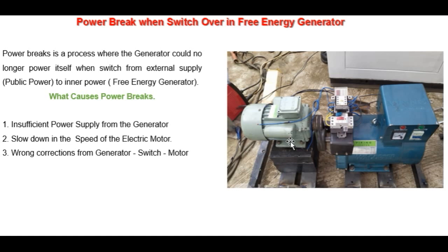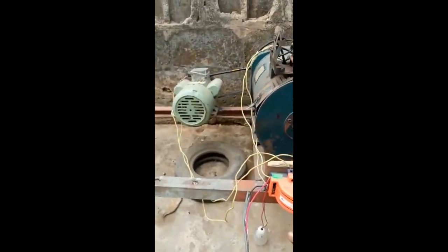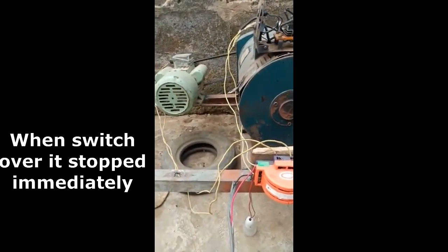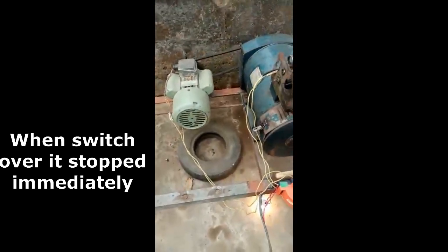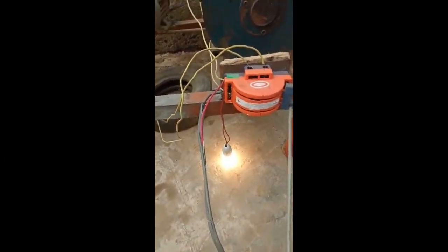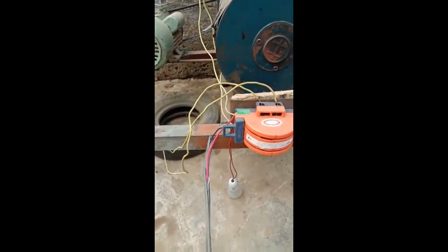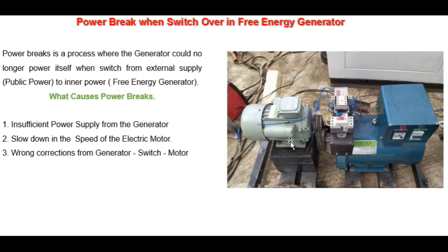That is why, whenever you switch over from the external public power supply to the internal power supply, there is going to be a complete power brick and a break in transmission. Now that the power is connected, I want to switch it on — you can see what I'm talking about. And it stops immediately; the current flow stops.